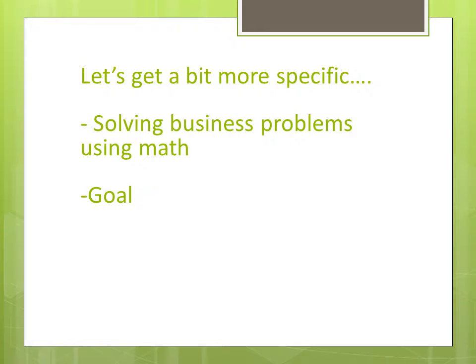For example, if you're running a manufacturing plant, your goal could be: what kind of products should I make to get the maximum amount of revenue? Or your goal could be: what kind of products should I make such that I incur the lowest amount of cost? These are two distinct goals and will require two different kinds of decisions.